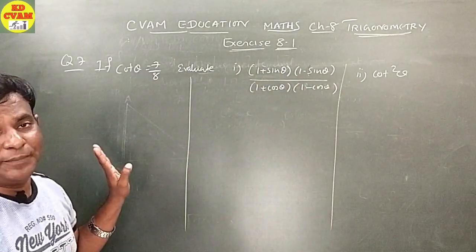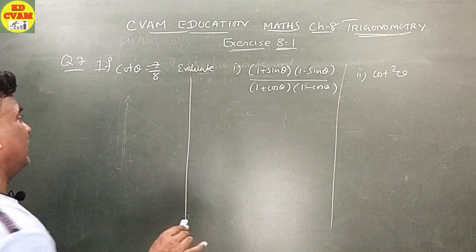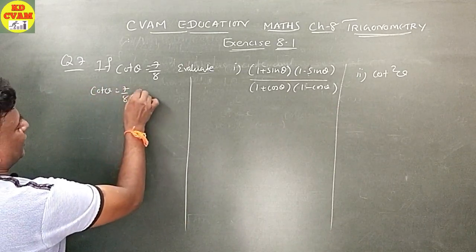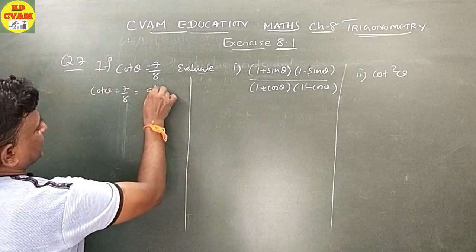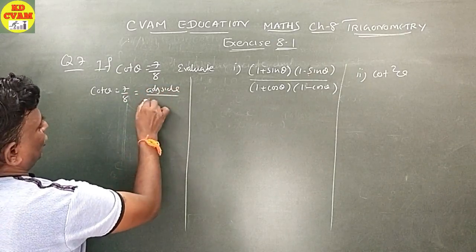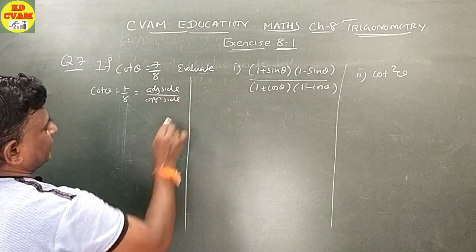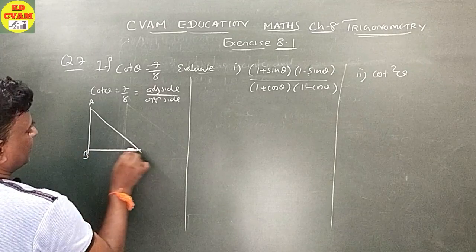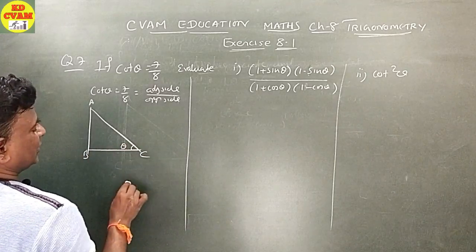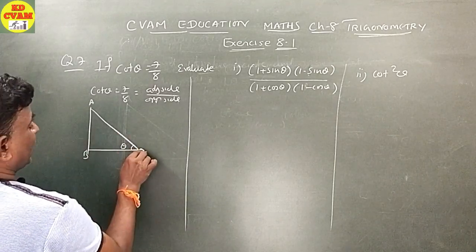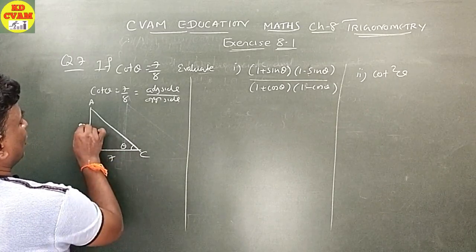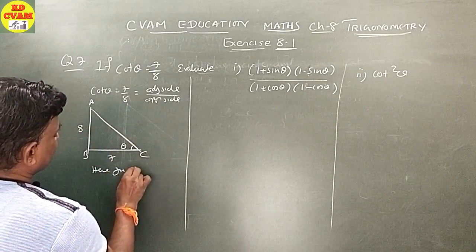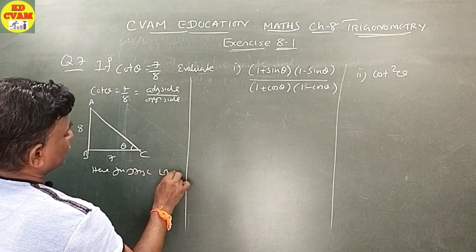We will use the triangle method. Cot theta is equal to adjacent side upon opposite side, which equals 7 upon 8. Taking triangle ABC with angle B equal to 90 and placing theta at angle A. Adjacent side is 7 and opposite side is 8.